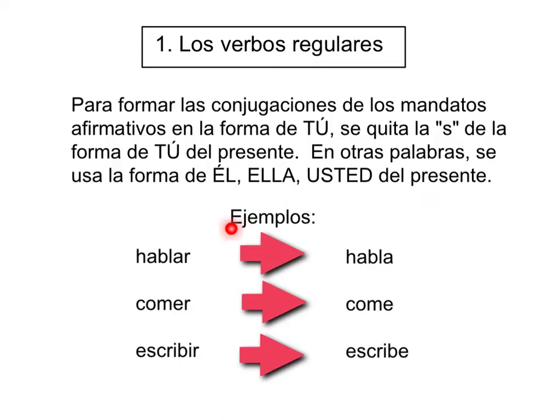Algunos ejemplos: Tenemos el verbo hablar — la conjugación solamente es habla. Verbo comer — come. Escribir — escribe.